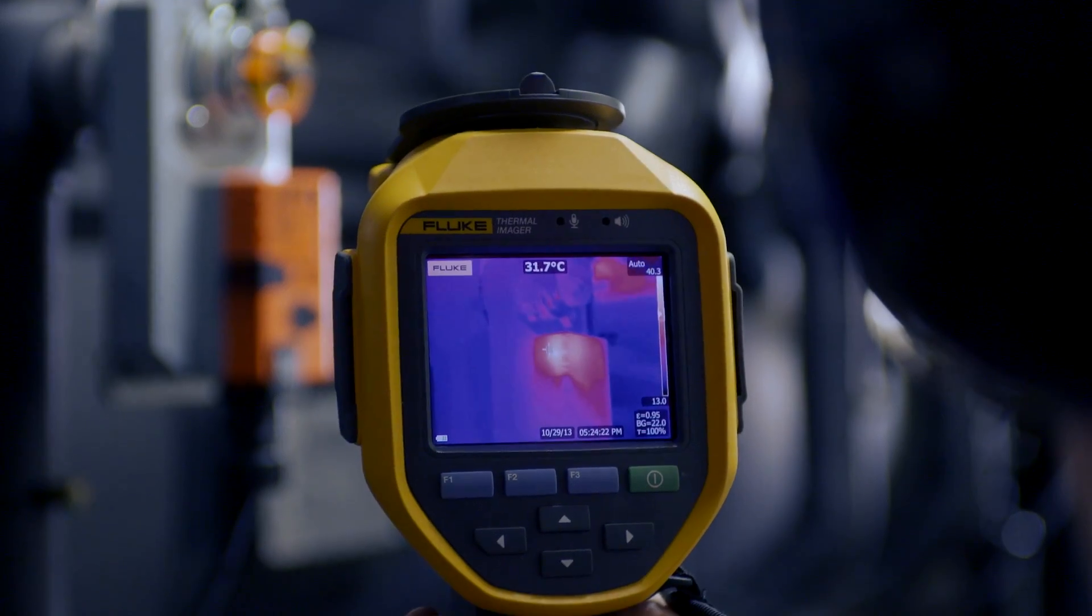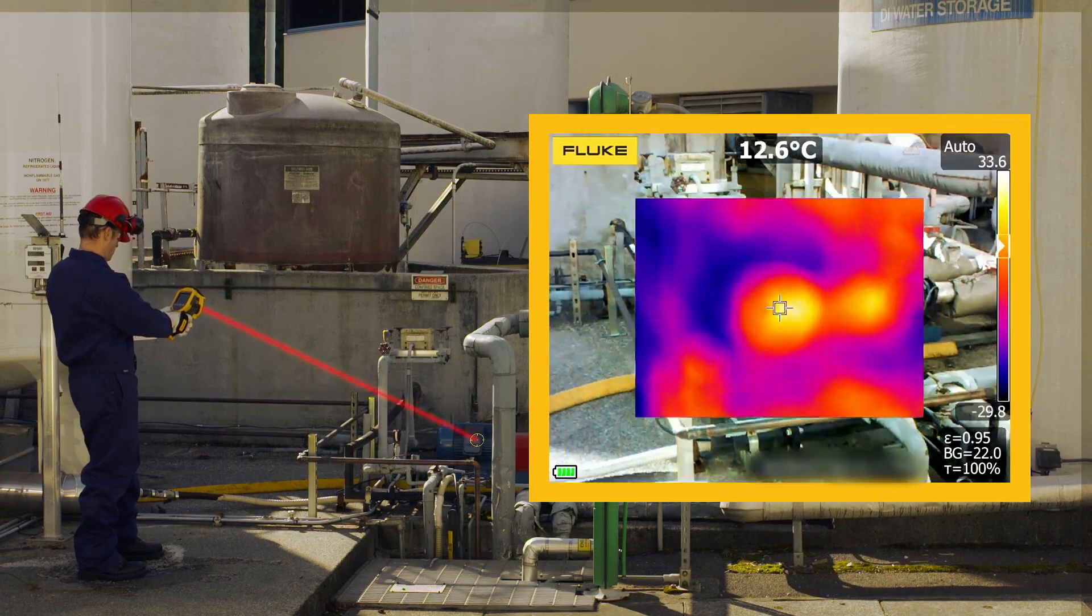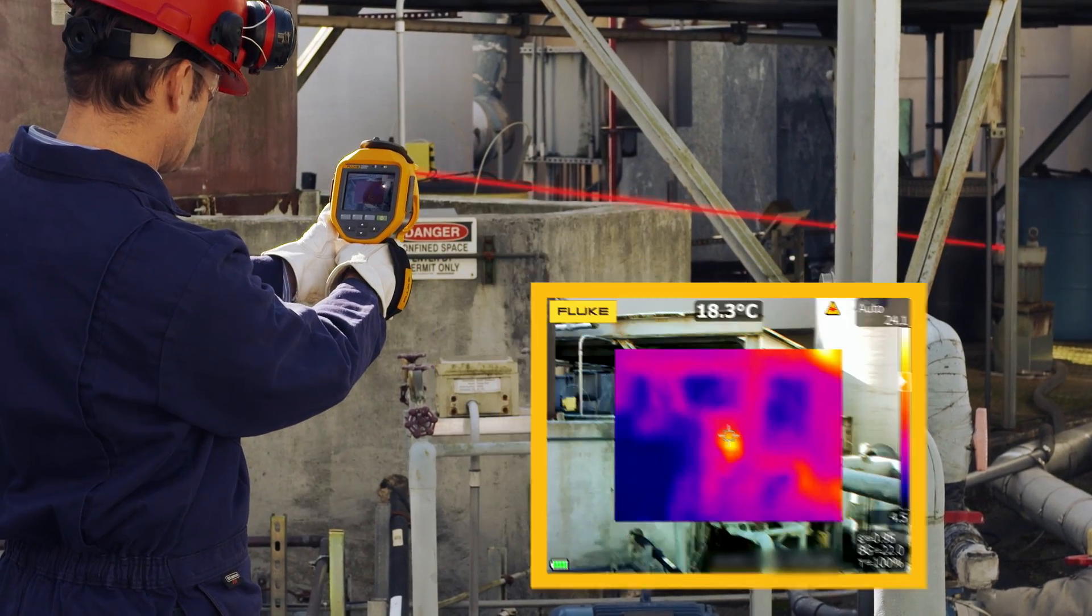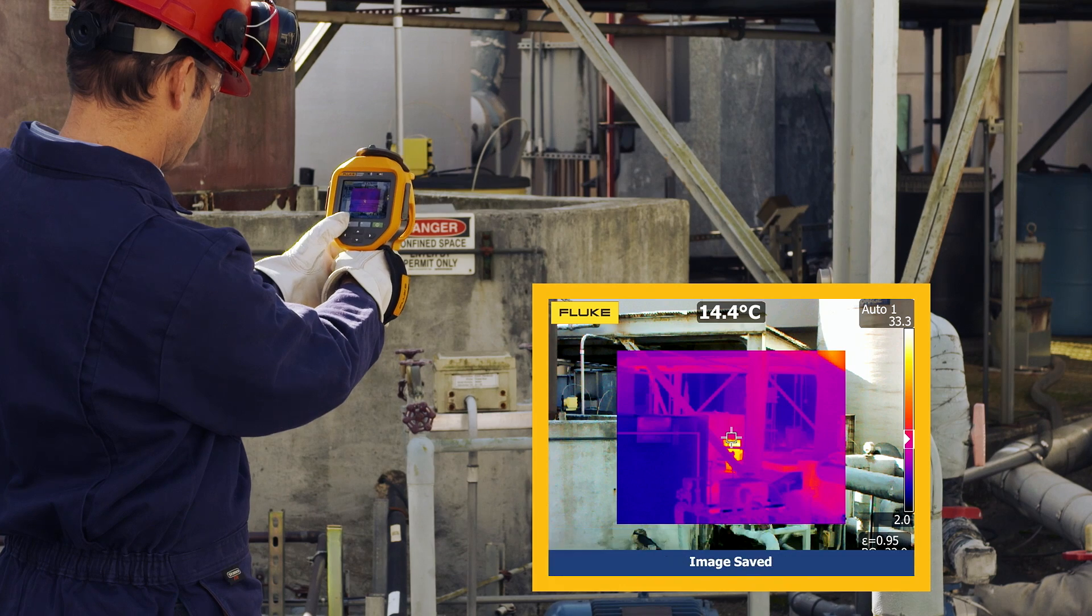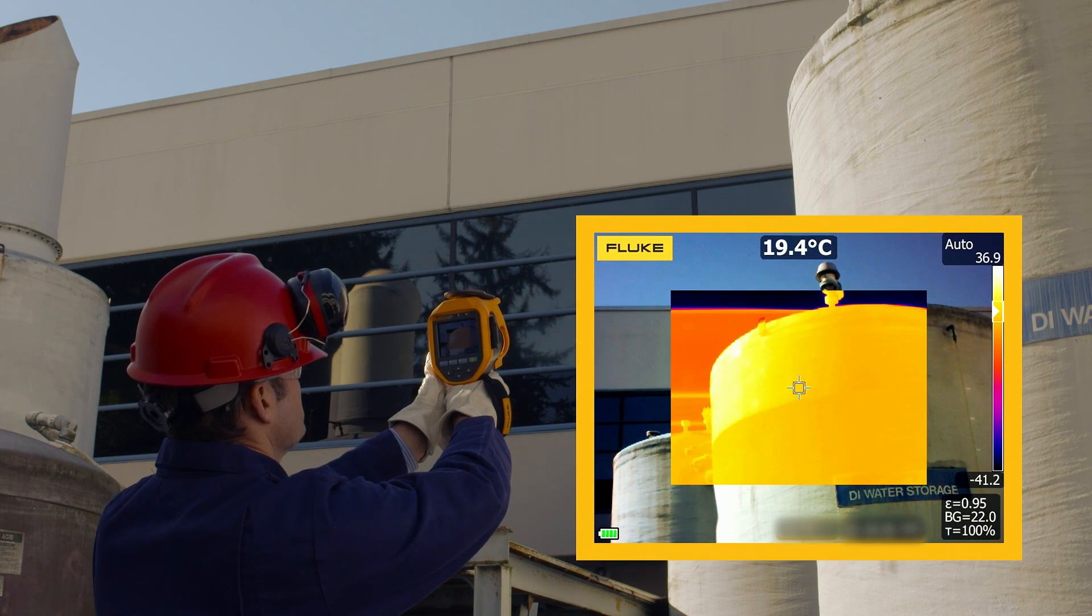These Fluke cameras are the only cameras on the market with laser-sharp autofocus. Focusing images of many objects at different distances takes time and is often a challenge. Not anymore. Simply point, focus, and capture your image. Consistently in-focus images easily within a few seconds.